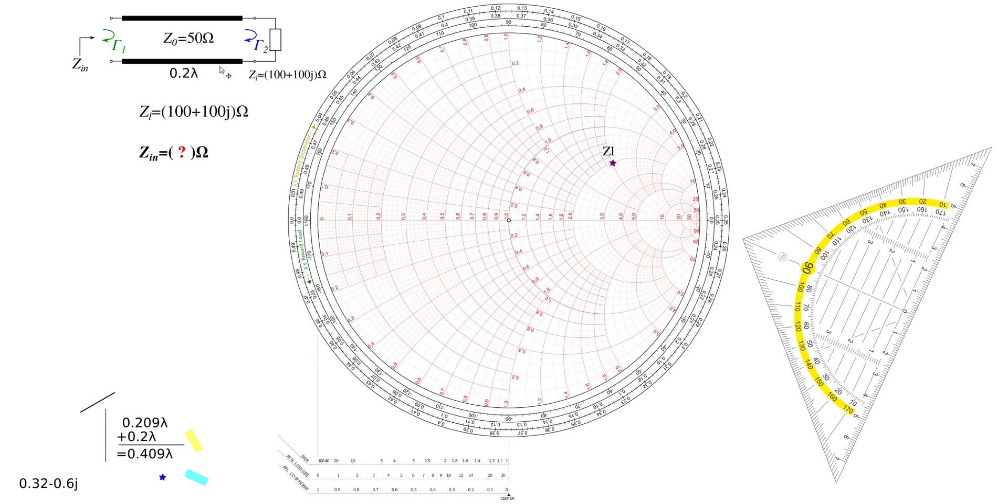Now, by inserting that line, this point will rotate around the center to a new point somewhere here, depending on the length of the line. That's the transformation of the line impedance. How do we figure out the rotation and the length of the rotation?